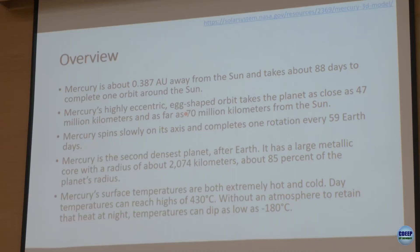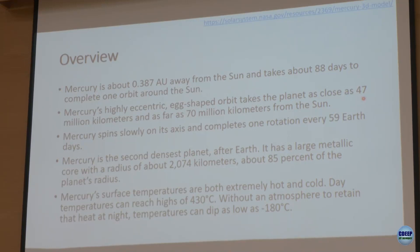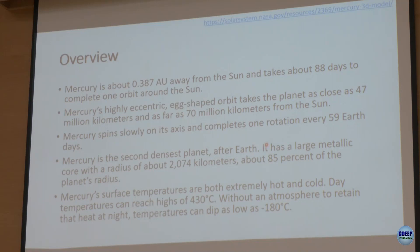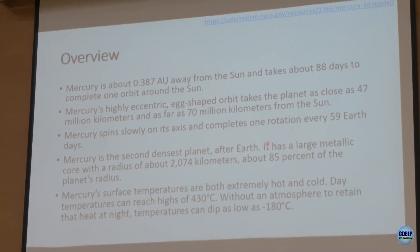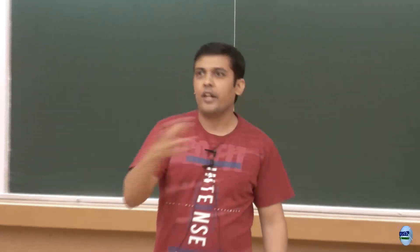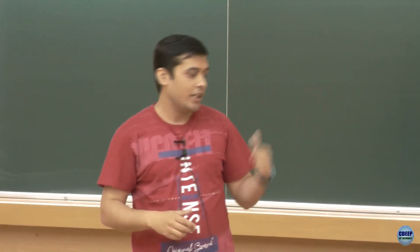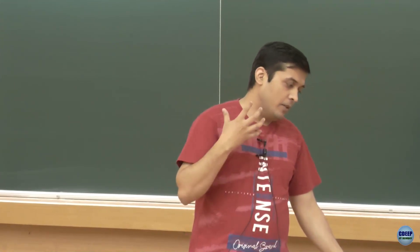Because of its eccentric orbit, Mercury ranges from as close as 47 million km to as far as 70 million km from the sun, compared to Earth's 150 million km. It is the second densest planet in our solar system after Earth. Mercury rotates very slowly — it takes about 59 days to complete one spin, whereas Earth and Mars both take roughly one day.